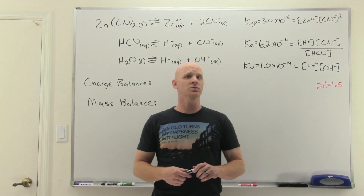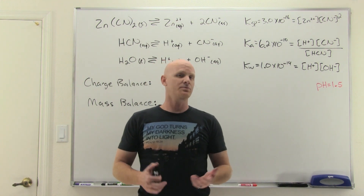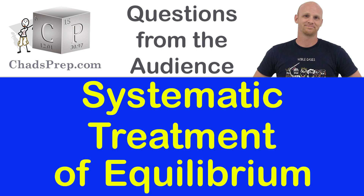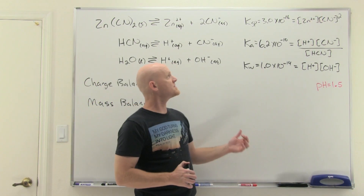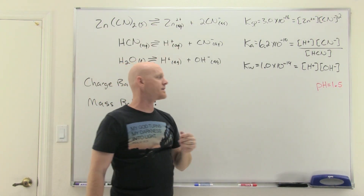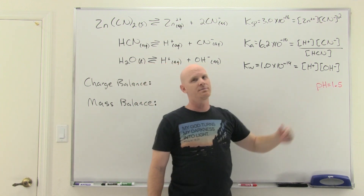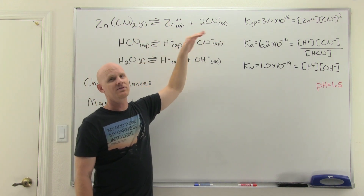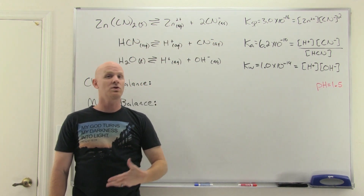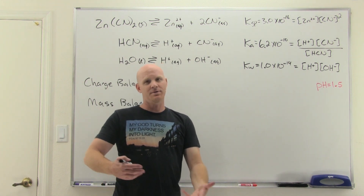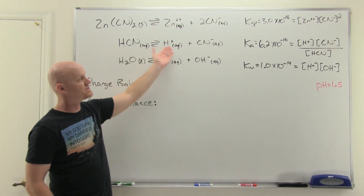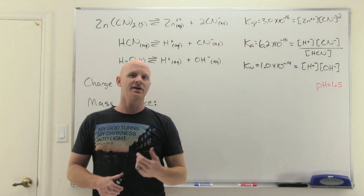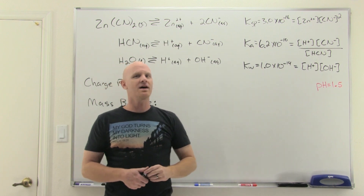In this lesson we're going to do a systematic treatment of equilibrium. This question comes from Rama. We're going to deal with the solubility of zinc cyanide, but not in pure water — we're going to be at a pH of 1.5. When zinc cyanide dissociates you get zinc and cyanide ions, but cyanide is a base and it can react with water to form HCN. We've got the Ka for hydrocyanic acid, so we've got competing equilibria or multiple equilibria interacting here. A simple ice table is not going to get the job done.